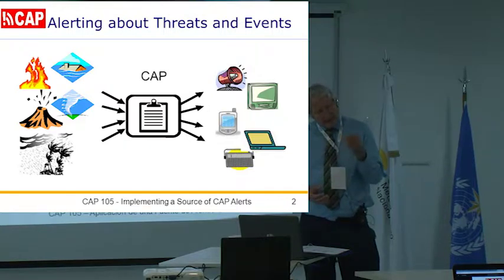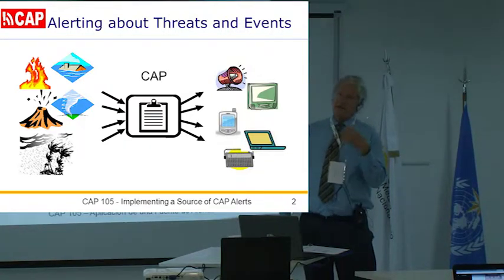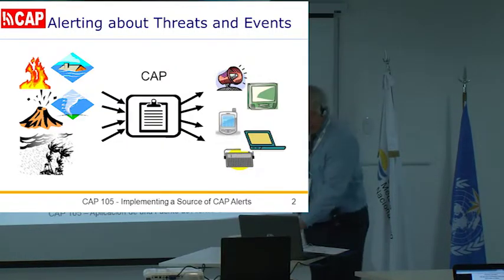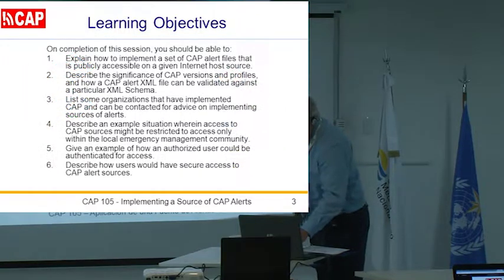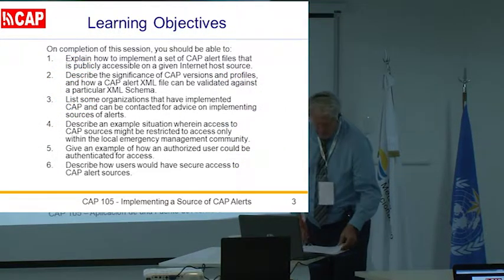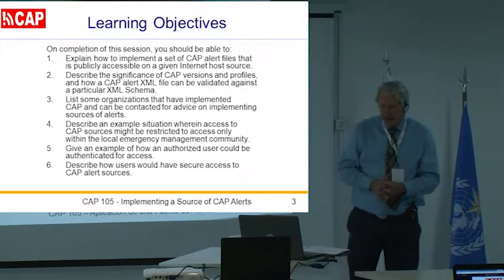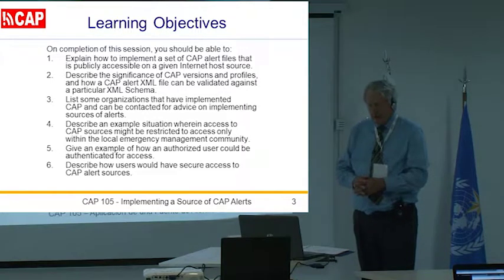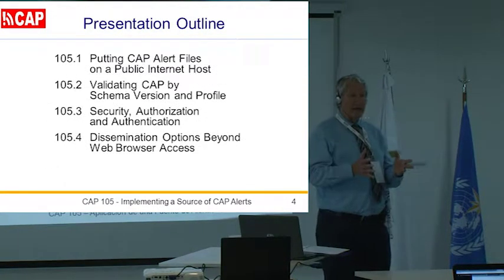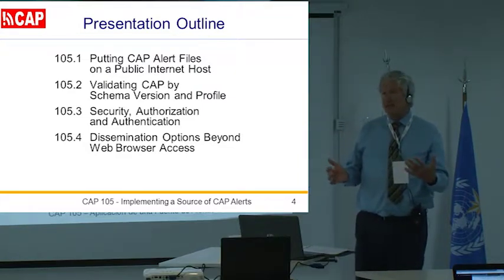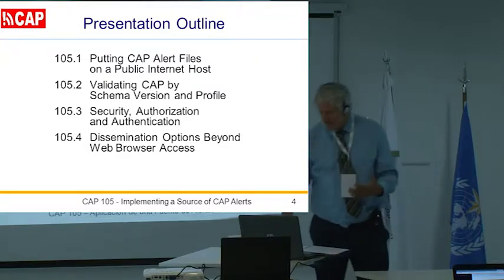The key requirement of any CAP-enabled alerting is that alerting authorities are putting out messages in CAP format. My first topic is: how do you put a CAP alert on a public internet host? We're going to do that simply by editing a text file, and we'll take it piece by piece.